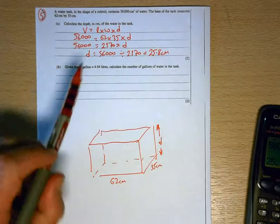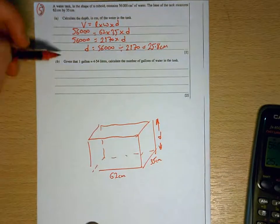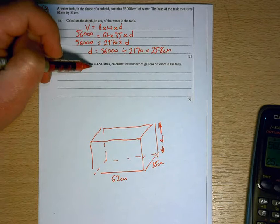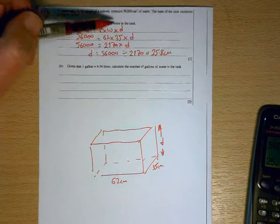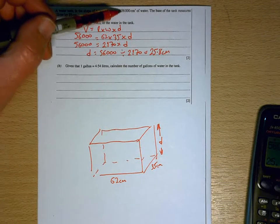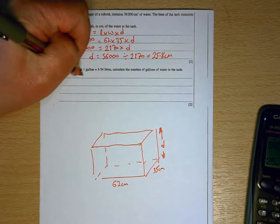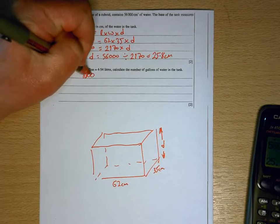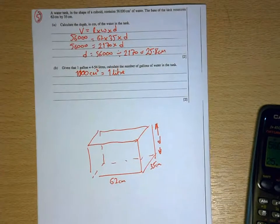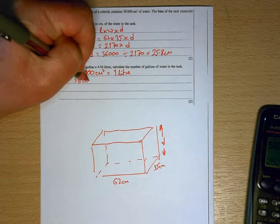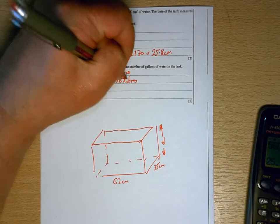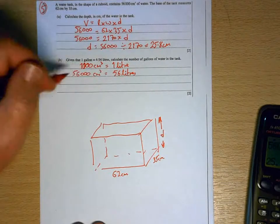So that didn't have anything to do with conversions. It's the second part that does. Now there's two stages to this. First of all, it's telling us that one gallon is equivalent to 4.54 liters, but we haven't been given the amount of water in the tank in liters. We've been giving it in cubic centimeters. So the first thing that you need to remember is that one thousand cubic centimeters is the same as one liter. So 56,000 cubic centimeters will be the same as 56 liters.